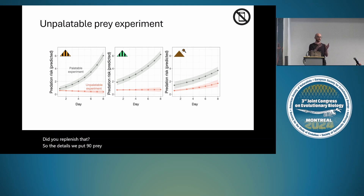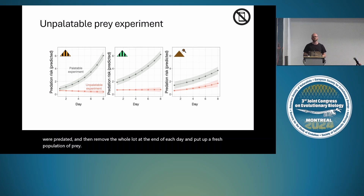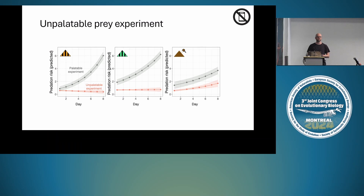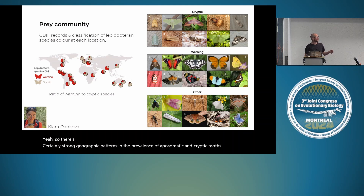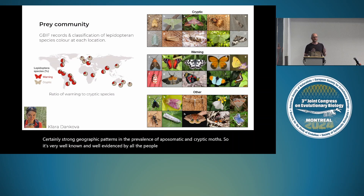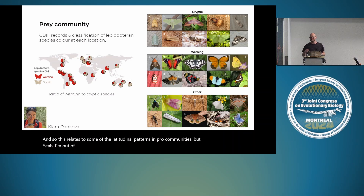In terms of experimental details, we put 90 prey out on a random tree each day, removed them when predated, then removed the whole lot at the end of each day and put up a fresh population. Regarding the percentage of cryptic versus aposematic moth species at each site: there are fairly strong geographic patterns in the prevalence of aposematic and cryptic moths—they're much more common in the neotropics—which relates to latitudinal patterns in prey communities.